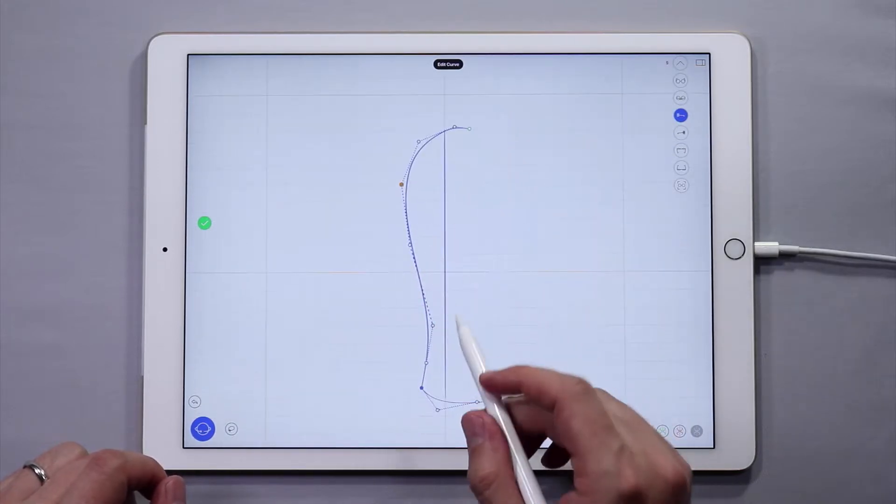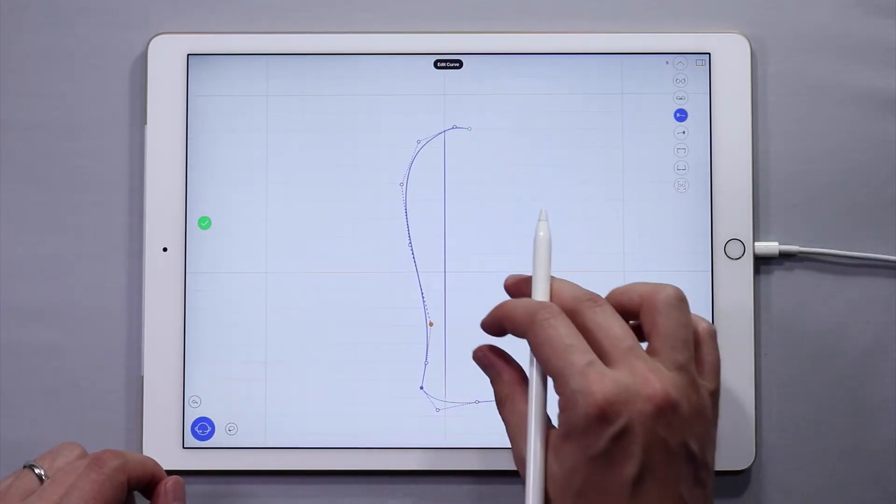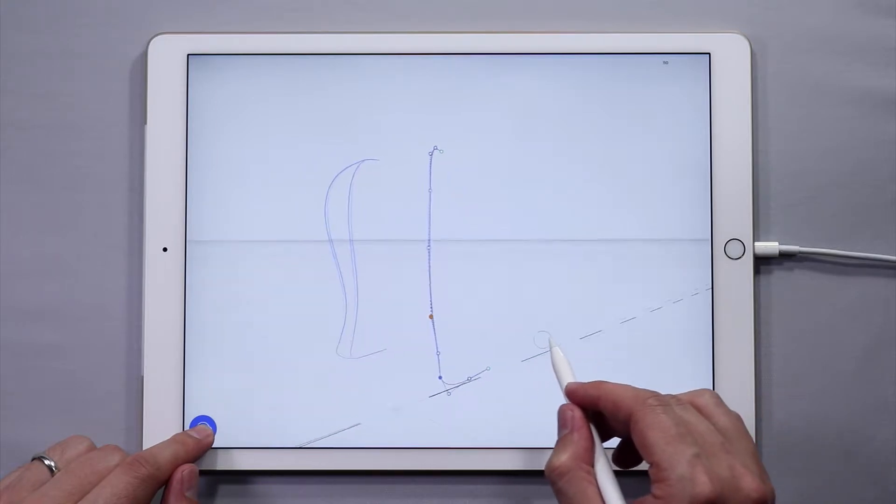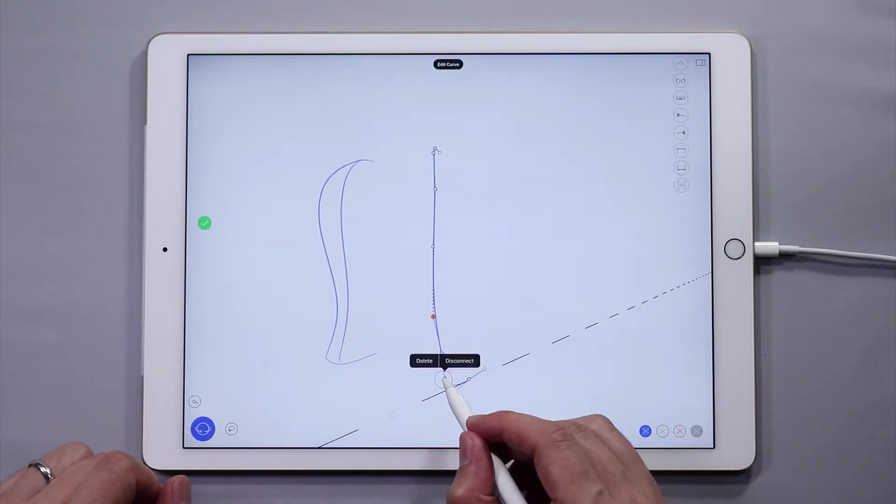Now if you have extra points that you don't need, tap on the point to delete it. You just tap and hold, and then tap delete. There you go.